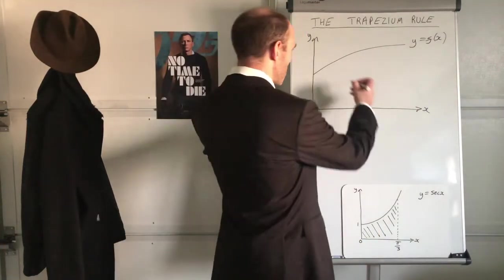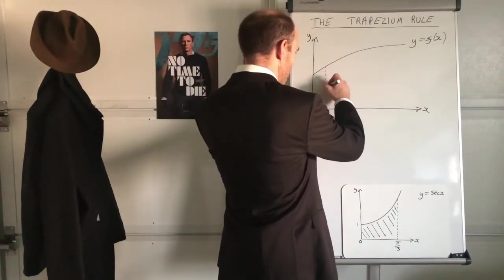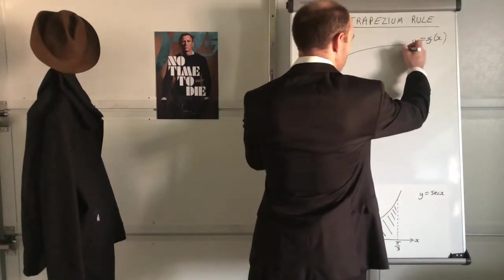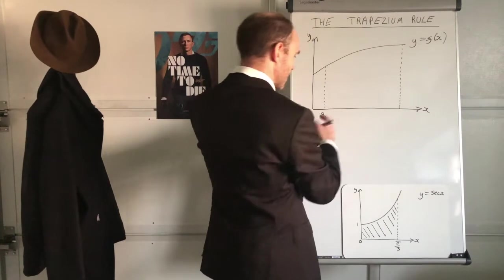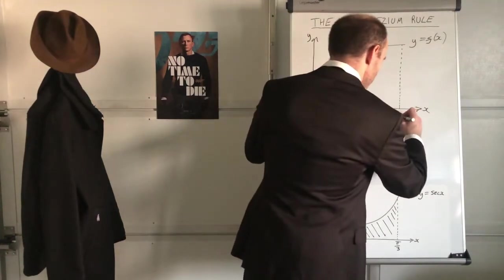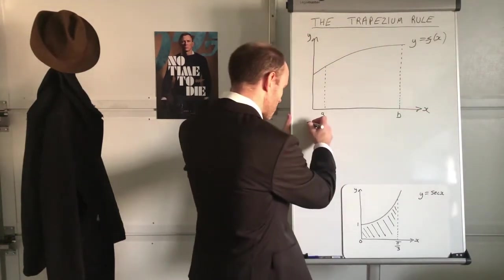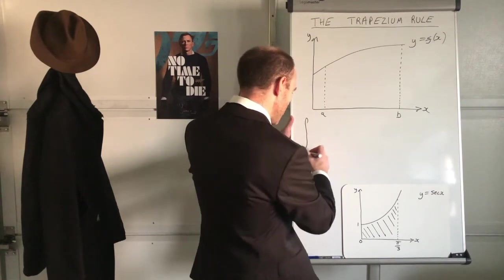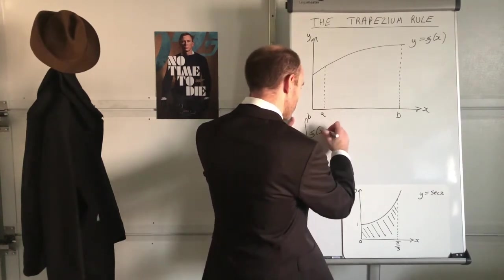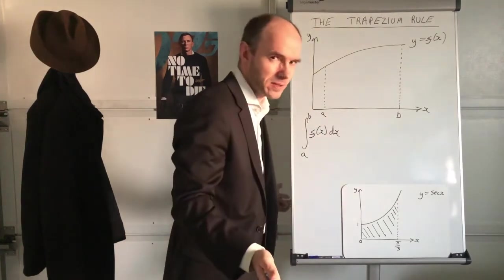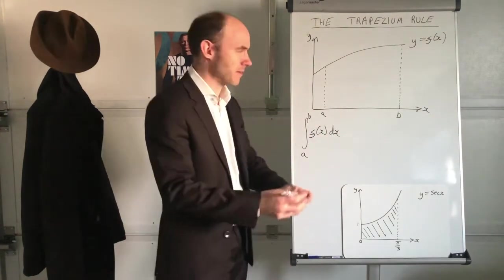Now suppose you need to work out the area bounded between the curve, the x-axis, and these two lines here, where x equals a and x equals b. How would you express that? You'd express it as integral limits a and b f of x dx. That's how you do it, that's what the area is.